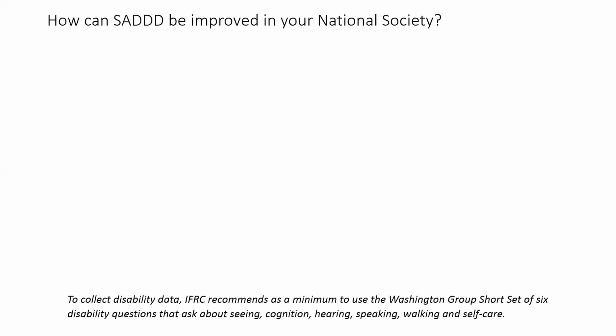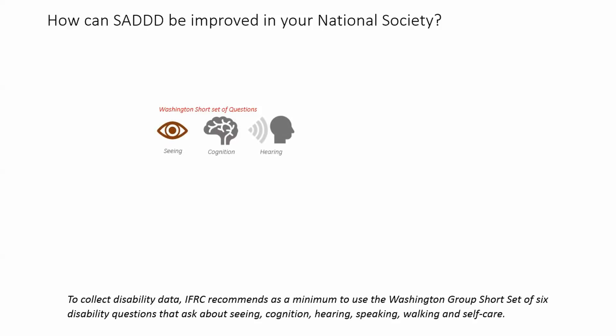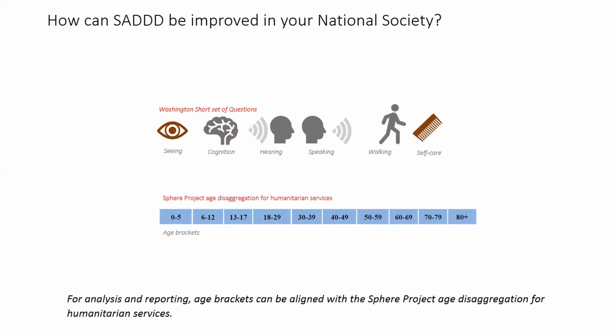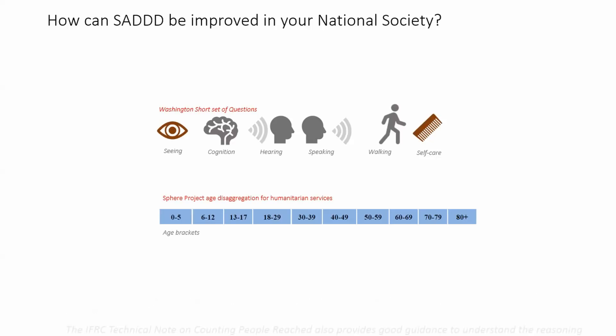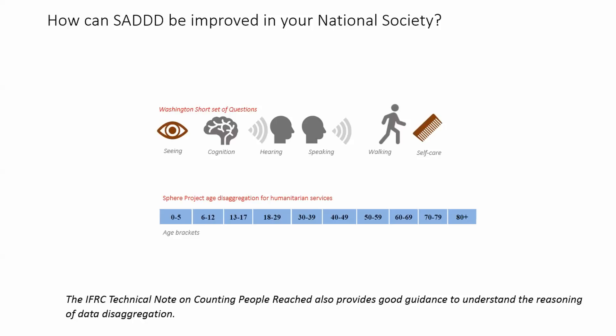To collect disability data, IFRC recommends as a minimum to use the Washington Group short set of six disability questions that asks about seeing, cognition, hearing, speaking, walking, and self-care. For analysis and reporting, age brackets can be aligned with the SPHERE project age disaggregation for humanitarian services. The IFRC technical note on counting people reached also provides good guidance to understand the reasoning of data disaggregation.